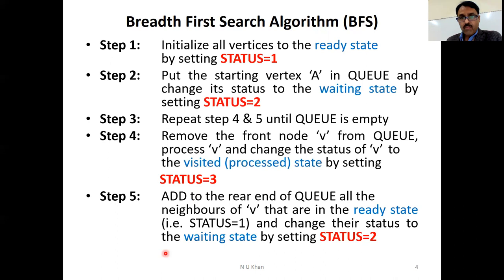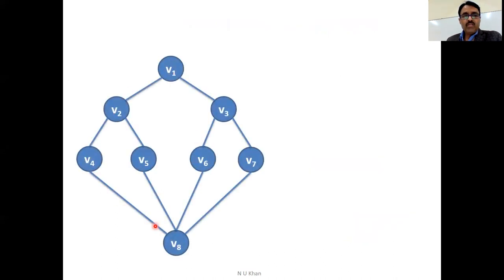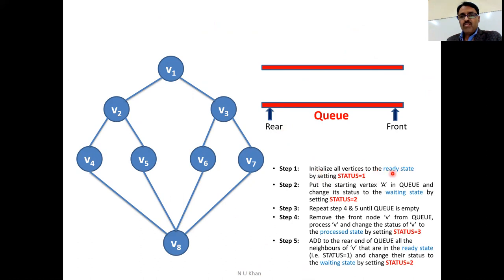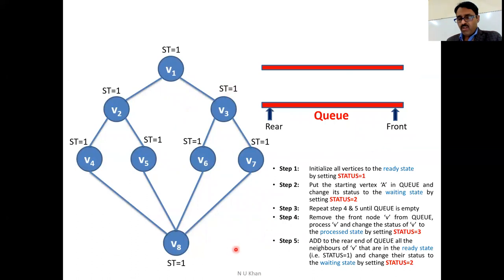Suppose the graph has eight vertices. According to the algorithm, first we create an empty queue — with a rear end and front end; insertion happens at the rear. Then initialize all vertices to the ready state by setting flag value 1, so every vertex has flag value 1. That means the whole graph is in the ready state. Now step two: choose the starting vertex — let us assume V1 is the starting vertex. We add it to the queue and set the flag value to 2.